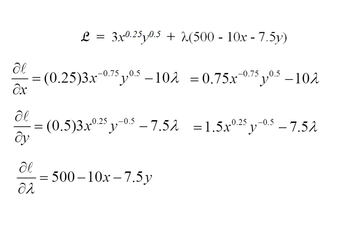I have one more partial derivative to take, and that's with respect to lambda: 500 minus 10x minus 7.5y. Now, this you recognize is the constraint. That's always going to be the case. Whenever I differentiate with respect to lambda, out will come my budget constraint.